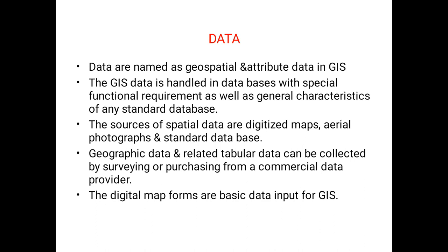Next, coming to our fourth component: data. There are two types of data — geospatial data and non-geospatial data, also known as attribute data. GIS data is handled in databases with special functional requirements as well as general characteristics of any standard database. The sources of spatial data are digitized maps, aerial photographs, and standard databases. Geographic data and related tabular data can be collected by surveying or purchasing from a commercial data provider, and digital map forms are basic data input for GIS.